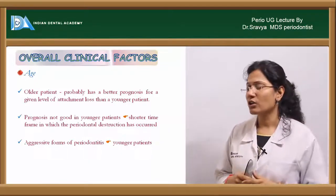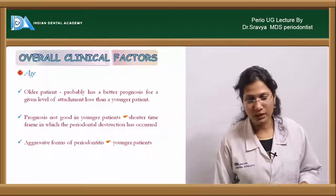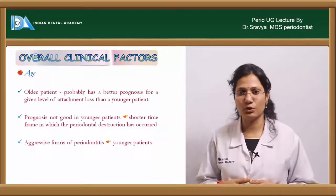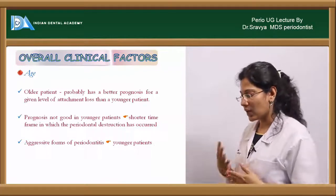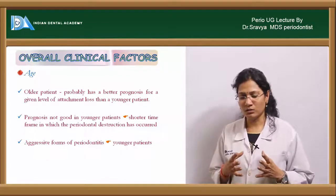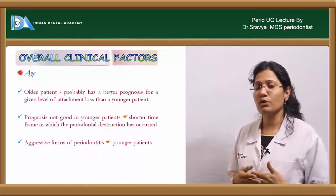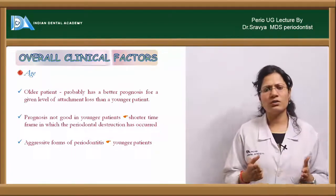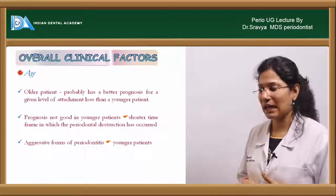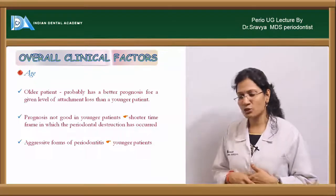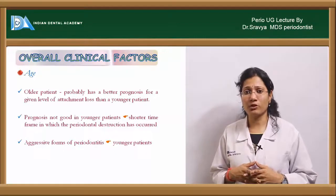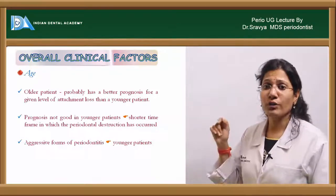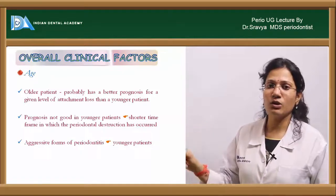Now your age — an older individual has a better prognosis when compared to a younger individual. In a younger individual, the time it took for the disease to progress and produce its clinical signs and symptoms or for the destruction to occur was at a very less age. It means that within a short period of time there has been rapid destruction in a younger individual, therefore the prognosis of that individual would be poor.